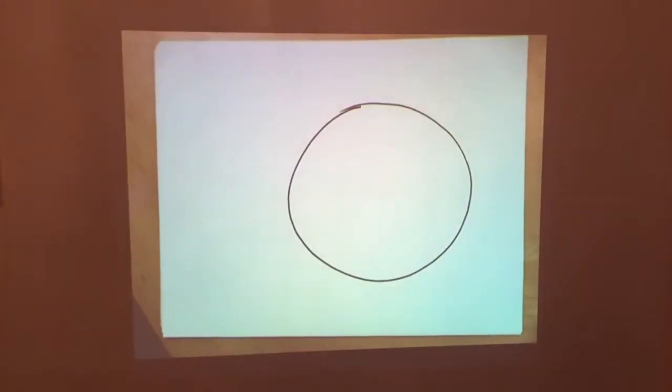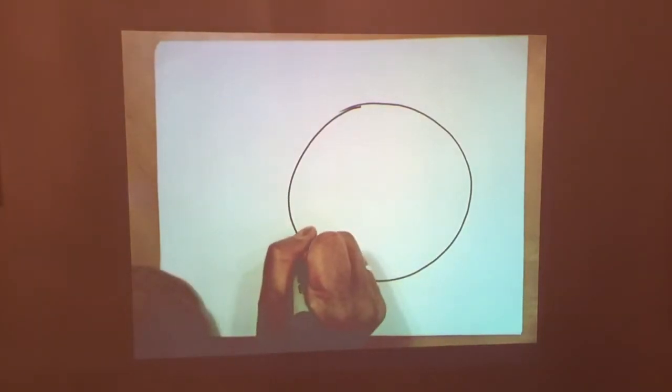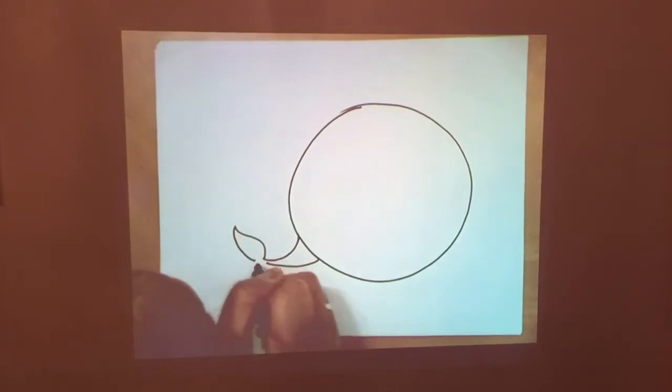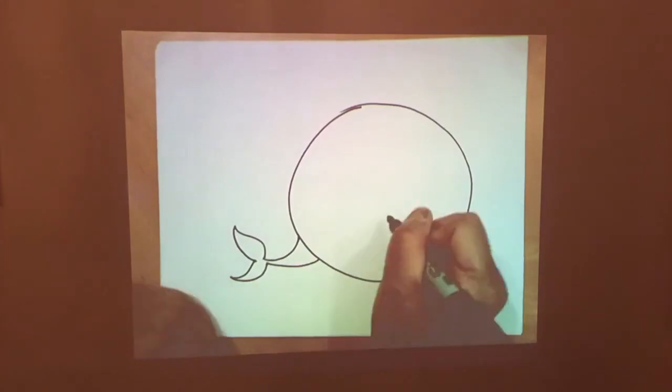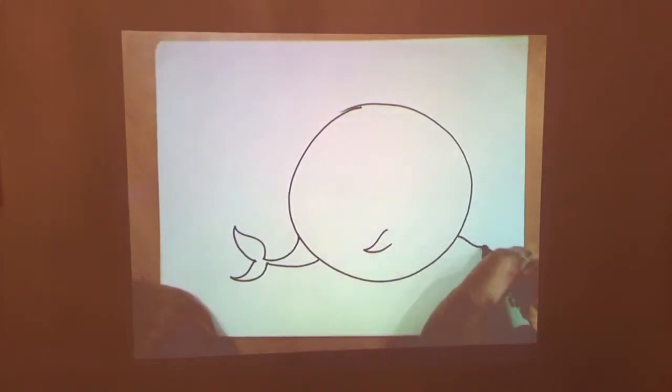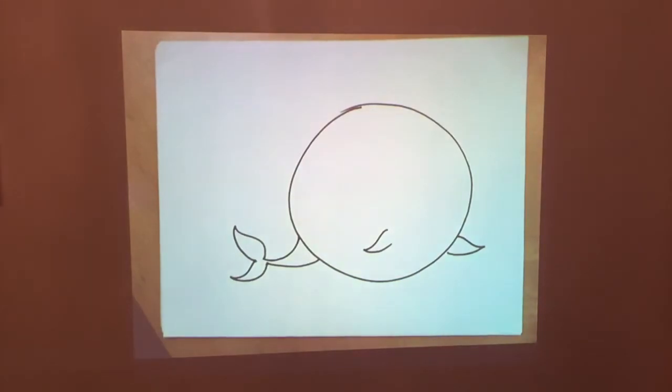It doesn't have to be perfect. Then let's draw the whale's tail. So draw an arc, half a circle there and another half a circle. Then draw sort of like a leaf-like shape and another one over here. That's the tail. Then let's draw two flippers. One here and another one over here.